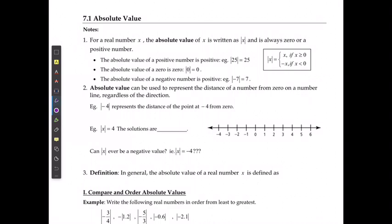For this next lesson we're going to start taking a look at absolute values and absolute value functions. For any real number x, the absolute value of x is written as x with two lines on the side. In your calculator it's under the function 'abs' under your math functions. It is always either 0 or a positive number — the absolute value of a positive number is always positive, so the absolute value of 25 is 25, and the absolute value of 0 is just 0.